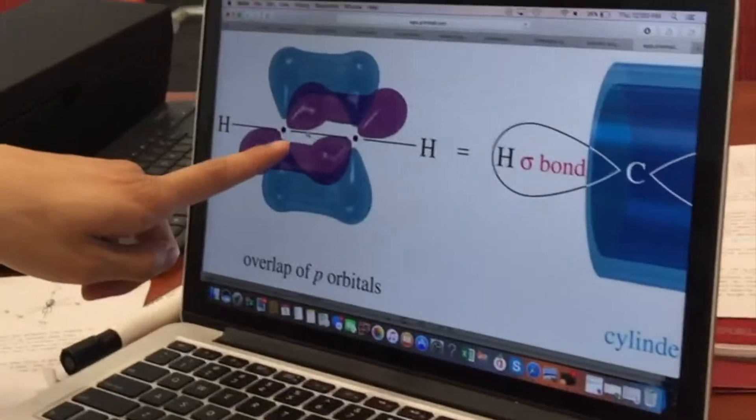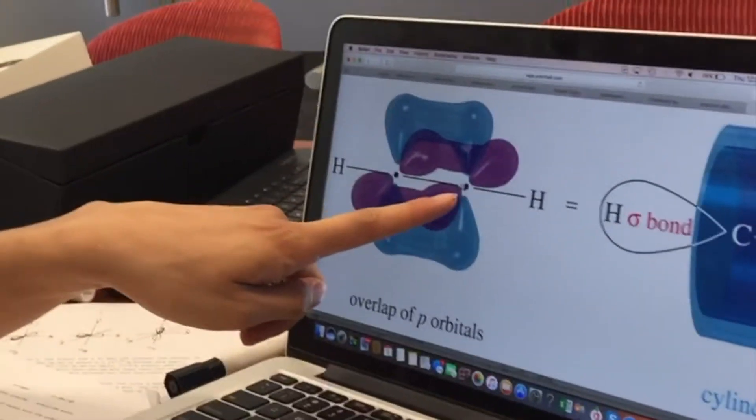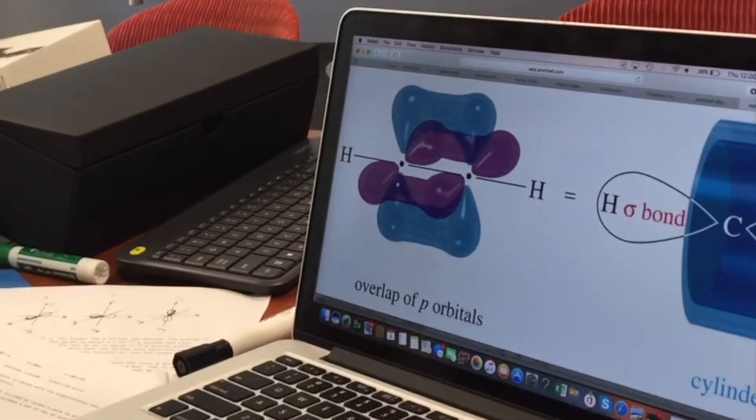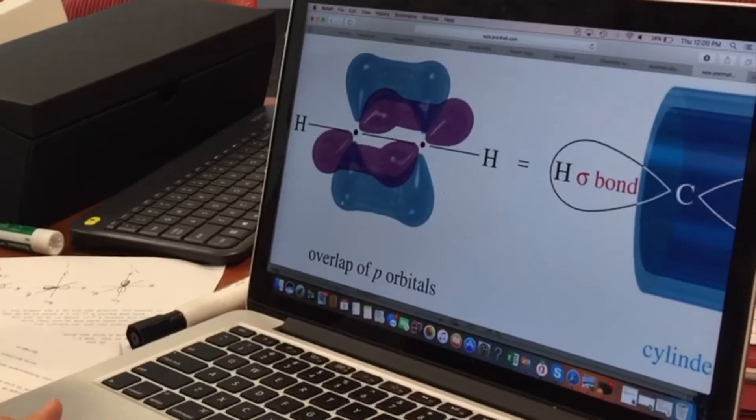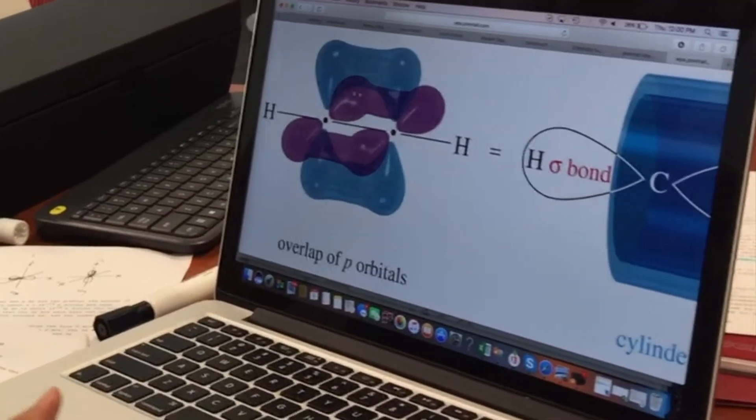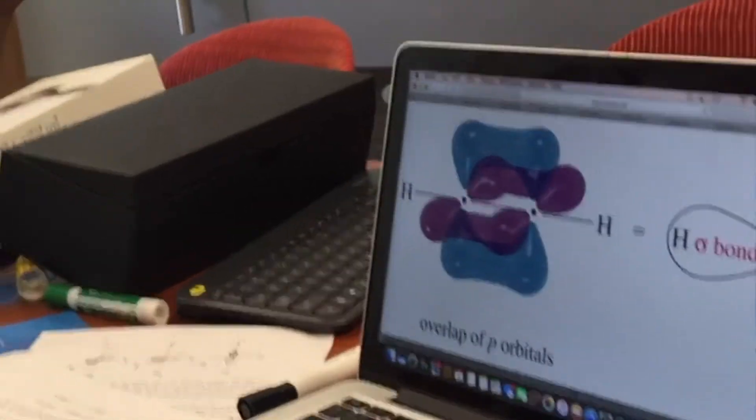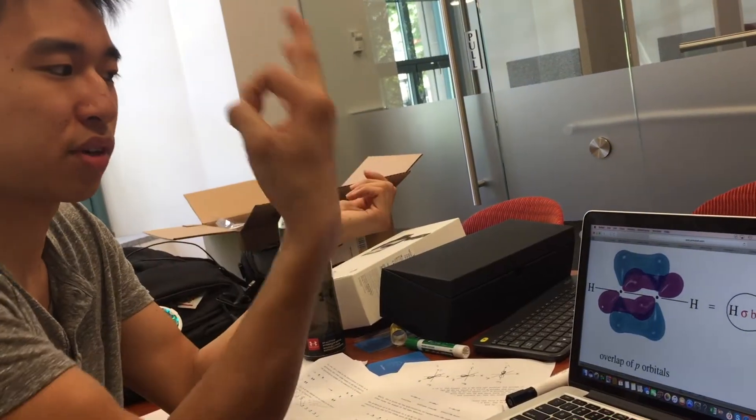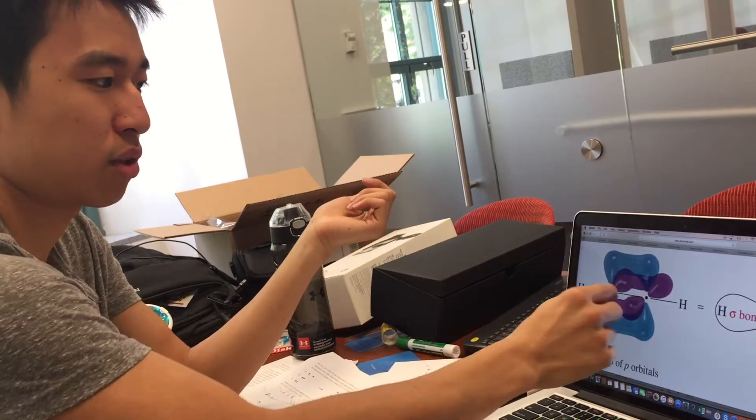So, like I said, one sigma bond is linking these two carbon atoms together. And then you have a pi bond here, in blue, and a pi bond here, in purple. So, yeah, that's why you have a triple bond. One, two, three. Now, this pi bond is created by what?